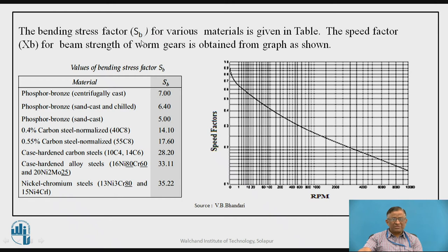The factors SB1 and XB1 can be taken from standard charts. SB1 and SB2 are the bending stress factors which depend upon the materials for the worm and worm wheel. SB1 is the bending stress factor for the worm, which depends on worm material — normally steel or alloy steel. Considering any of the available materials, the corresponding value of SB can be found. The worm wheel material is normally phosphor bronze, and based on its manufacturing method, the bending stress factor can be determined.